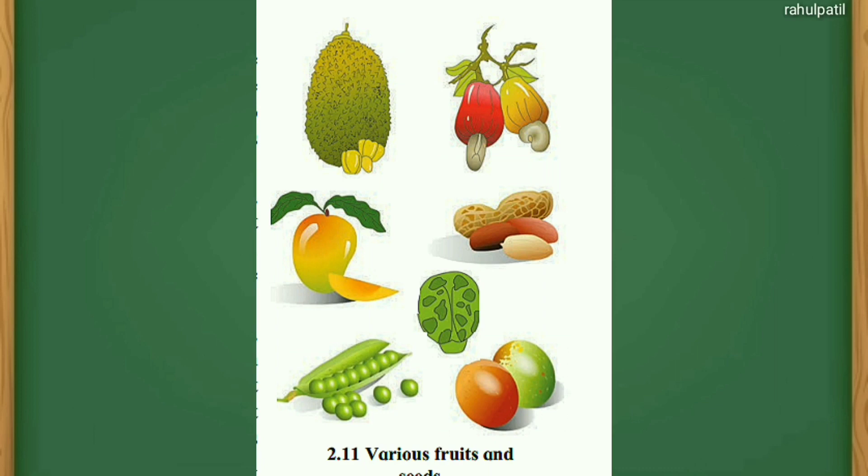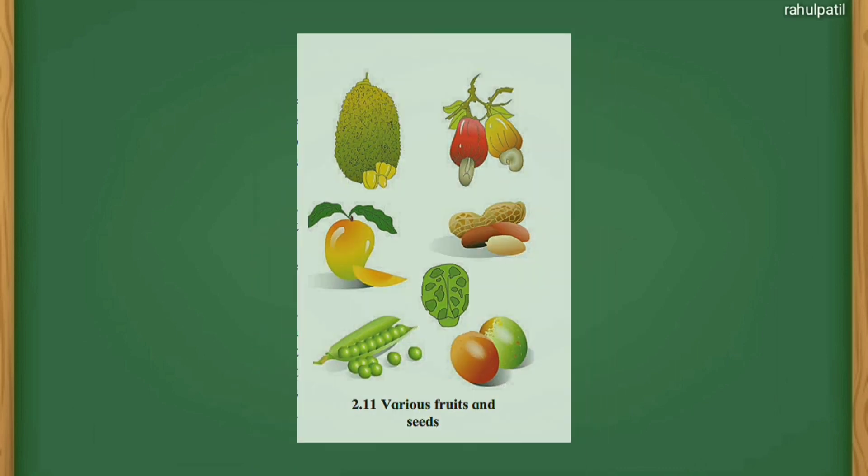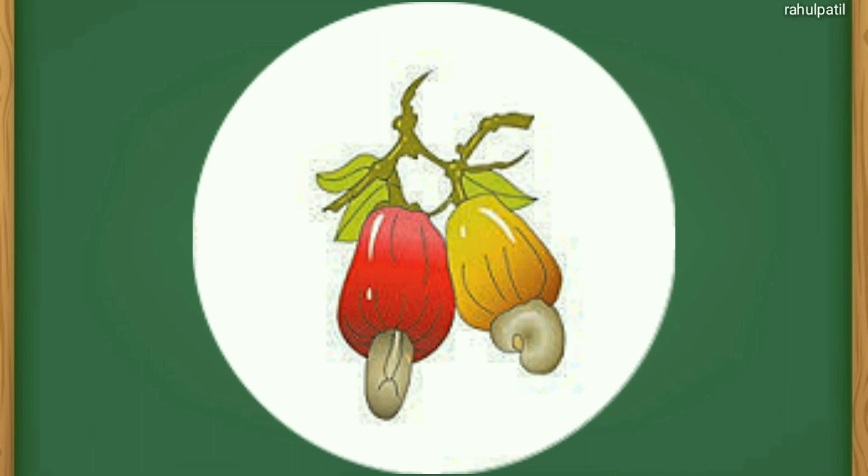Each fruit has a different skin or shell, fleshy part, and seed. In case of fruits like cashew, its seed is outside the fruit.